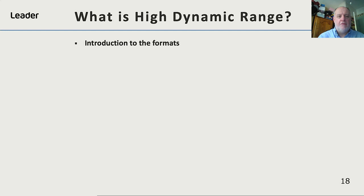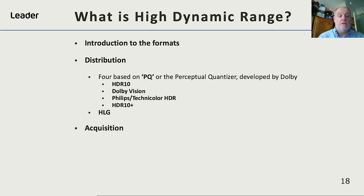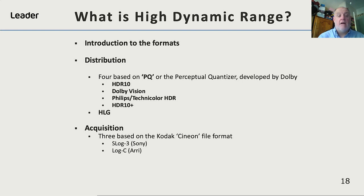HDR comes with a number of formats, which I'll split into distribution and acquisition. On the distribution side, we have four formats based on PQ, the perceptual quantizer developed by Dolby: HDR10, Dolby Vision, Philips-Stroke Technicolor HDR, and HDR10+. Then we have hybrid log gamma, which was jointly developed by the BBC and NHK. On the acquisition side, we have three formats based on Kodak's Cineon file format — these are manufacturer-specific: S-Log3 from Sony, Log C from ARRI, and C-Log from Canon. You also have PQ for acquisition and hybrid log gamma.